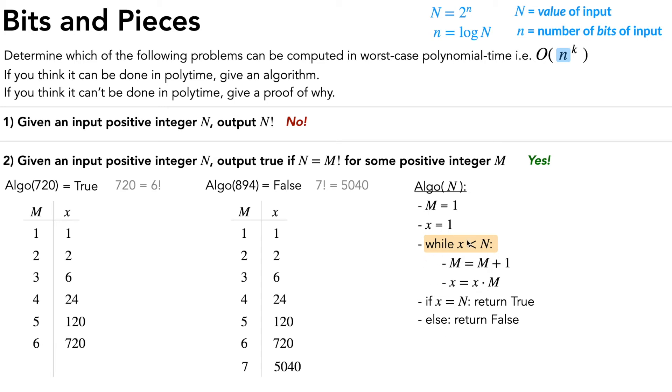So at what point does x become greater than or equal to N and we exit the loop? Well, we can see in this loop, the only time x changes is when we multiply it by M. Specifically, at each time we multiply, we know that we're being multiplied by at least 2. Because the first time we multiply, we multiply by 2 and then M only increases from then on. If we keep multiplying a number by 2 and doubling it over and over and over again, how long until it's greater than or equal to big N?